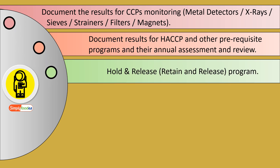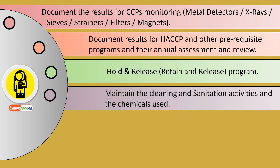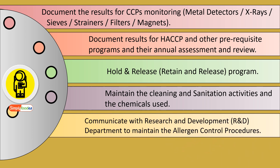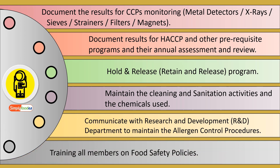Food safety professionals are responsible for maintaining cleaning and sanitation activities and the chemicals used in these processes. They are also responsible for communicating with the R&D department — research and development — to maintain allergen control procedures, which is a very important task. Additionally, they are responsible for training all members on food safety policies.